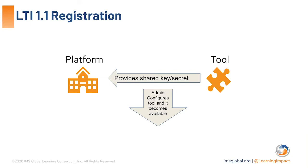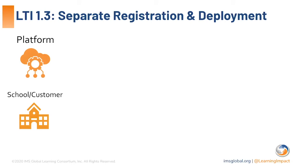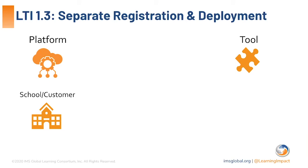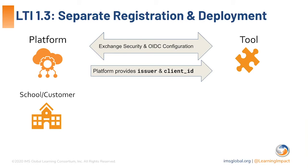In LTI 1.1 registration, the tool provides the key and secret, and once the admin configures it, the tool is immediately available for that platform and customer — just one action. For LTI 1.3, instead of a single platform-or-customer concept, the platform is separate from a school or customer. The security contract — the registration — happens at the tool and platform levels, not between every single customer and the tool. There's much less overhead for setting up security for many different customers.